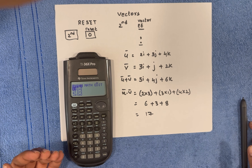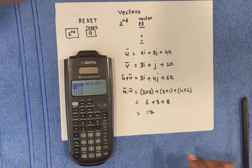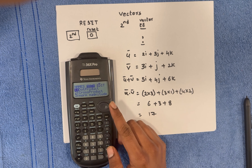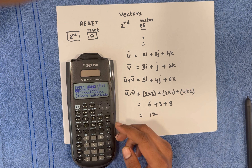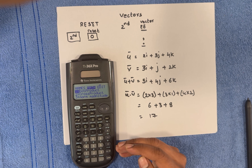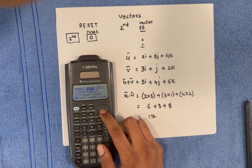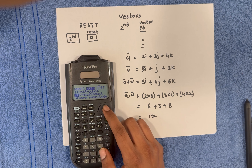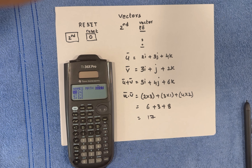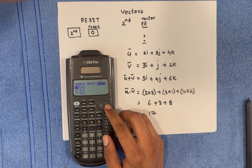The first option shows Names, the second shows Math, and the third is Edit. Names lists the vector names. Math shows what operations you can perform on vectors — dot product, cross product, and magnitude. Edit allows you to set the dimensions and values of a vector.